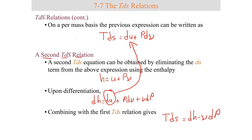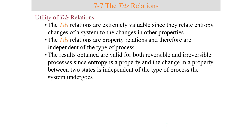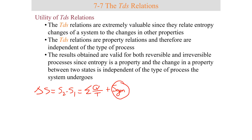These TDS relations are important because they relate entropy changes of a system to other properties. These are property relations and therefore independent of the type of process. In a second law analysis for a closed system, the entropy change from state 2 to state 1 equals the sum of entropy transferred plus that generated. We are trying to quantify the irreversibilities present, represented by S_gen — the higher its value, the more irreversibility is present.